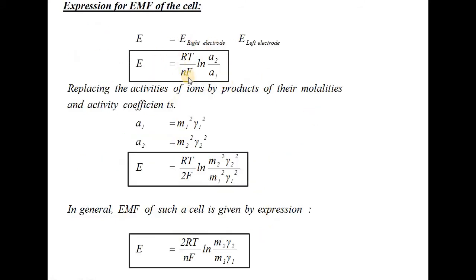Writing the EMF as E_RHS − E_LHS, we can replace the activity of ions by the product of molalities and activity coefficients. Putting A1 = M1²γ1² and A2 = M2²γ2², the net EMF is E = RT/2F · ln(M2²γ2²/M1²γ1²). In general, if N electrons are involved in the cell reaction, EMF = 2RT/NF · ln(M2γ2/M1γ1), where M represents molality and γ is the activity coefficient.